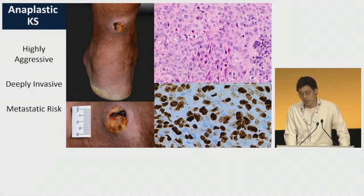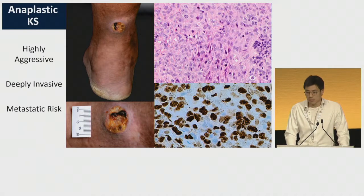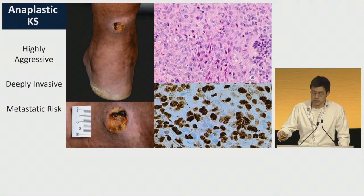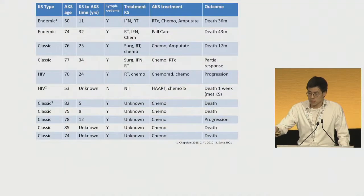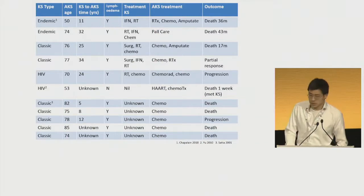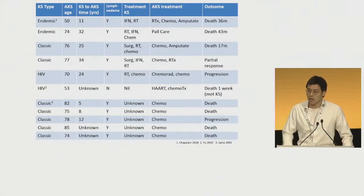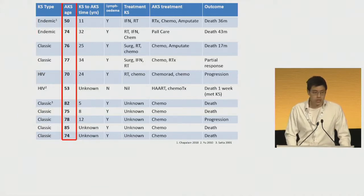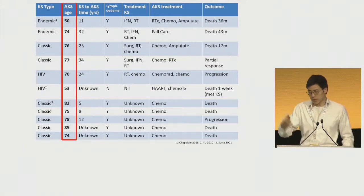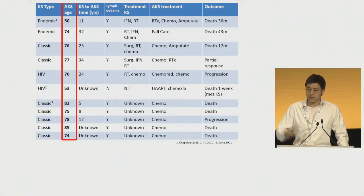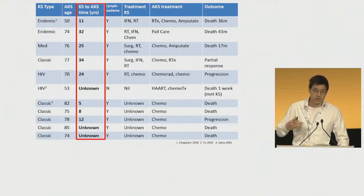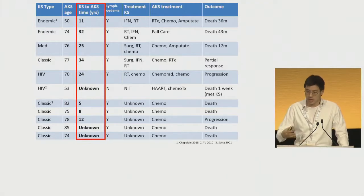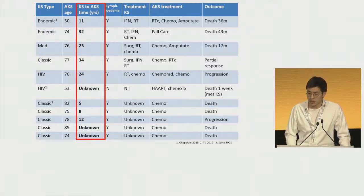Anaplastic KS is a highly aggressive form of KS. It's very rare, deeply invasive, and does pose a metastatic risk to patients. Here is a list of cases of anaplastic KS and their characteristics. It occurs in different forms of KS and generally tends to occur in older patients — up to 85 years, with the youngest being 50 years old. It tends to occur in patients who have had KS for a number of years, up to 34 years in one of these cases.